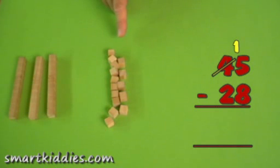So now I have 15 ones in the units column and I only have 3 tens because I traded one. Now I can work out the answer.